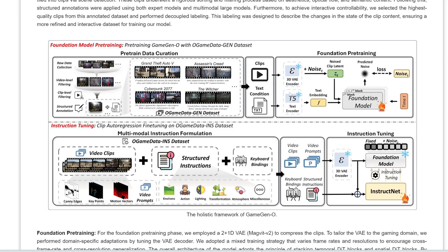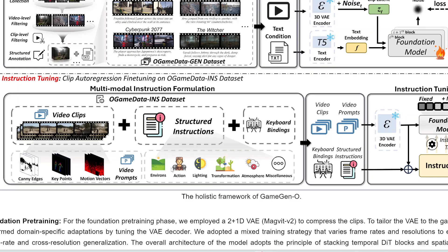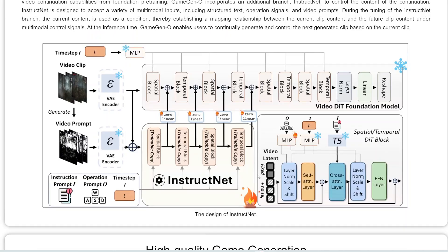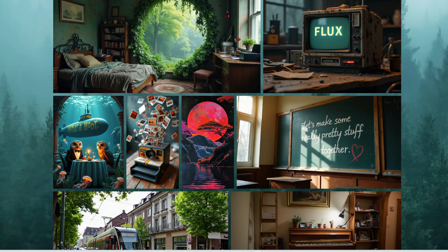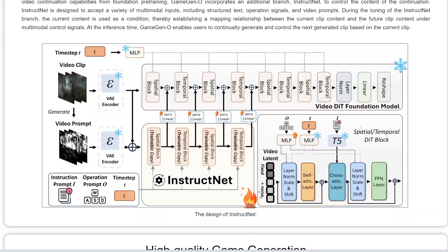After this first stage of training, the next stage involves instruction tuning — fine-tuning the model to follow specific instructions from the user. Game Gen O is built on a Diffusion Transformer architecture, which is also used by many of the top image and video generators out there. But instead of outputting just any video, this AI has been trained and fine-tuned to generate only gameplay-style videos.